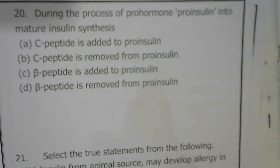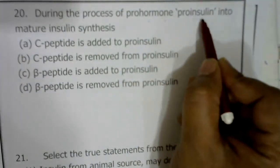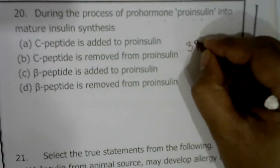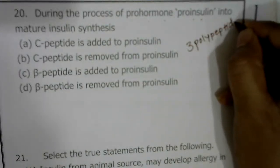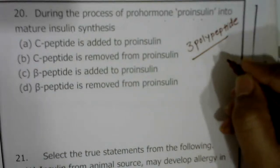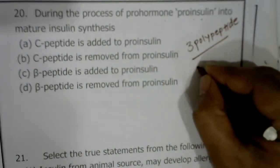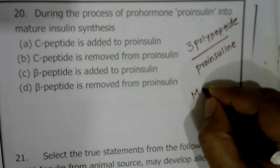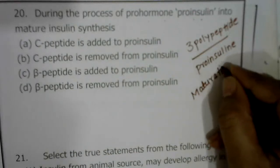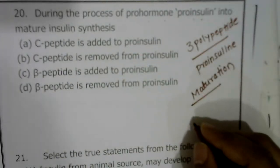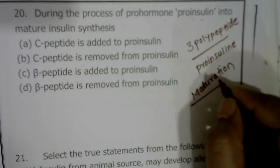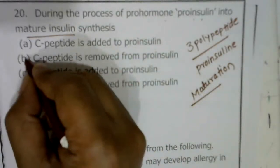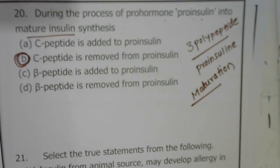Question twenty: during conversion of pro-insulin to mature insulin, what happens? When all three polypeptide chains — A, B, and C — are present, it is called pro-insulin or inactive insulin. During maturation, the C chain is removed. Once C chain is removed, only A and B chains remain, producing active insulin. The correct answer is the second option: C peptide chain is removed from pro-insulin.